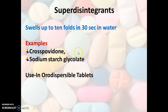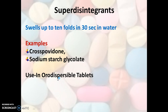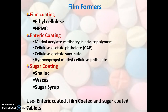Next are super disintegrants, which are special or optional excipients. Super disintegrants swell up to 10-fold in 30 seconds in water. Examples of super disintegrants are crospovidone and sodium starch glycolate. Super disintegrants are used in orally disintegrating tablets or wherever quick disintegration is desired.